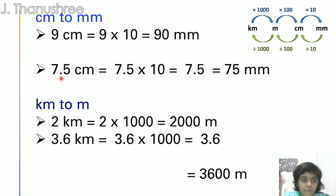7.5cm equals to 7.5 times 10. Ok friends, for this question we are going to move the decimal point one time. We are moving it one time because there is one zero in 10. So now the answer is 75mm.